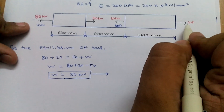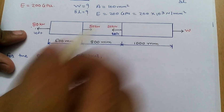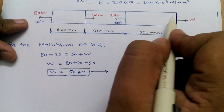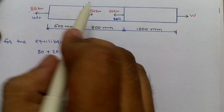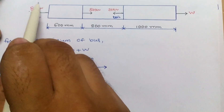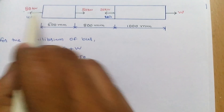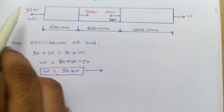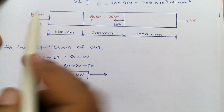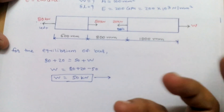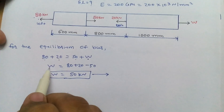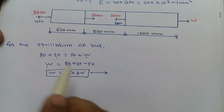We also check the direction of W. If the answer were negative, the direction of W would be changed. So for equilibrium of the bar, left side force equals right side force: 80 plus 20 equals 50 plus W, so W is 50 kN.